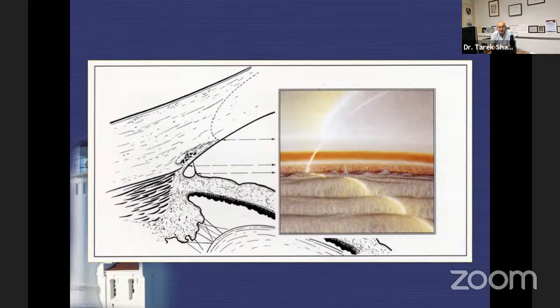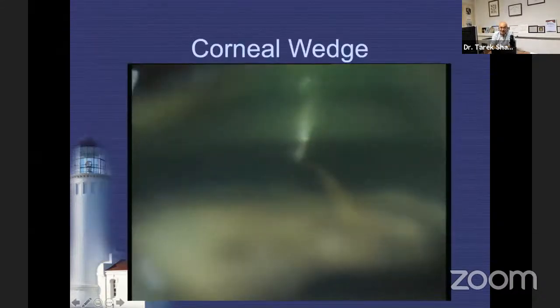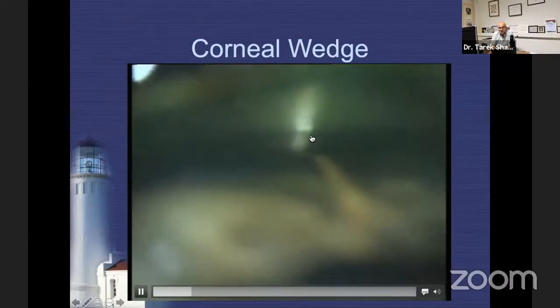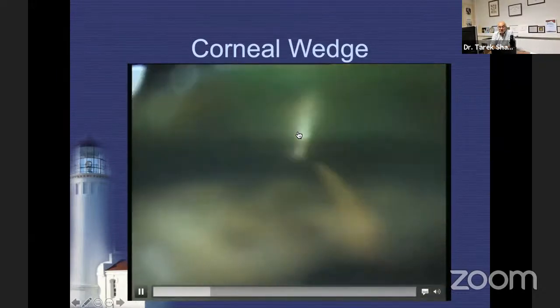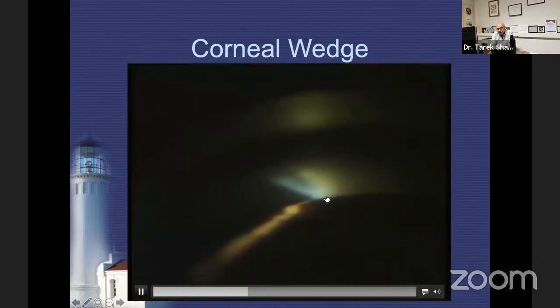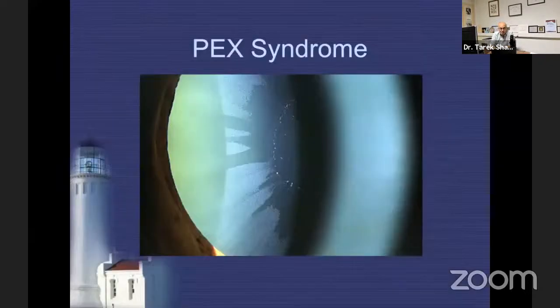Not all trabeculae are pigmented, so it is absolutely possible to miss a faint trabeculum. For that reason, I depend completely on the corneal wedge to identify Schwalbe's line, and once I have that landmark I can easily determine if the angle is open. Here you can see the corneal wedge behind the iris in a closed angle, and even dynamically we are unable to open it.